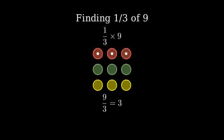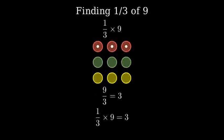We can also think about this as multiplication. If we multiply one-third times nine, we get three.